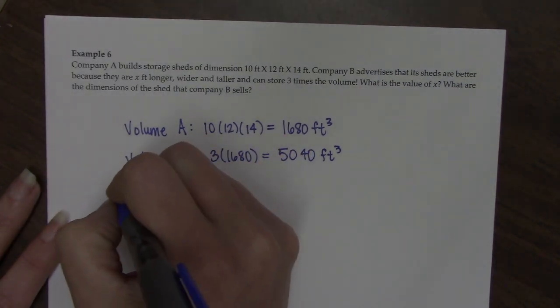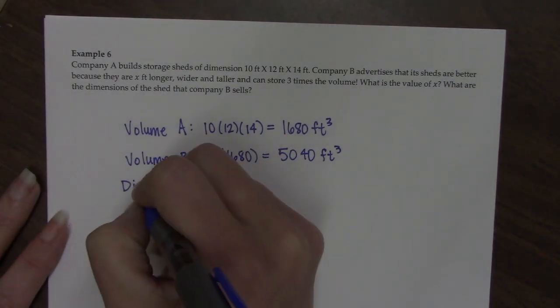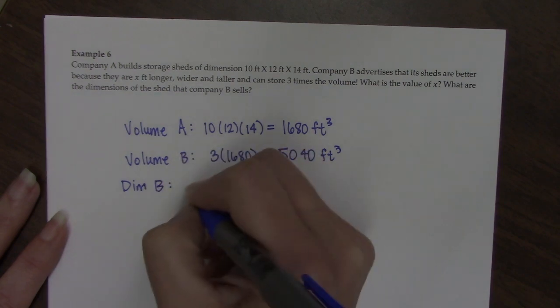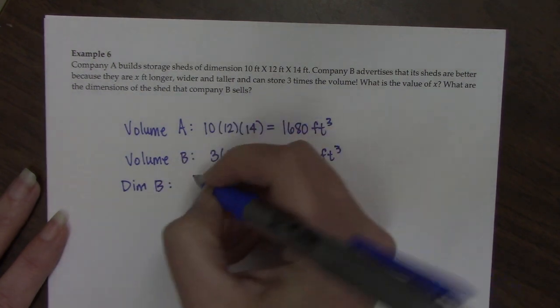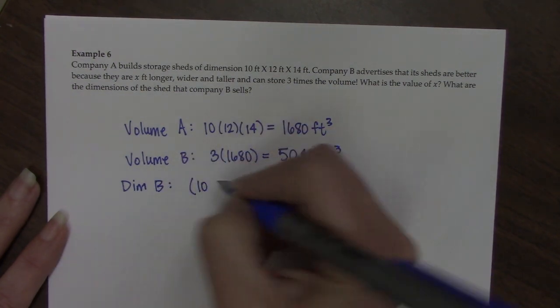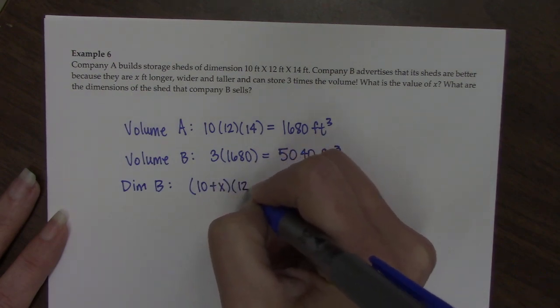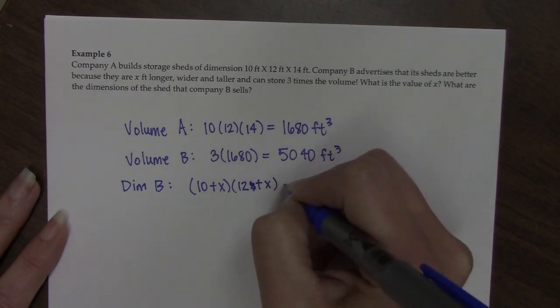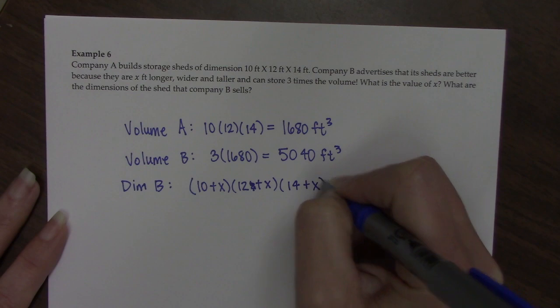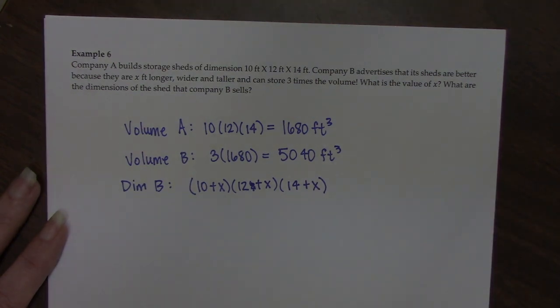The dimensions for Company B, well they claim that they take the shed and they add X to the base, the same distance X to the width, and the same distance X to the height.